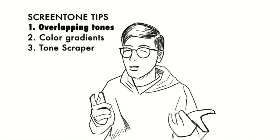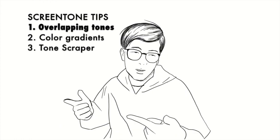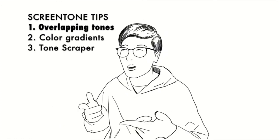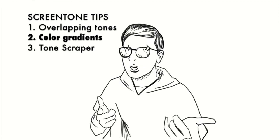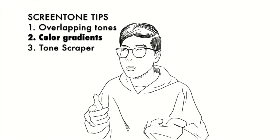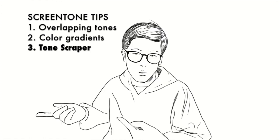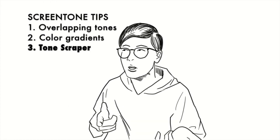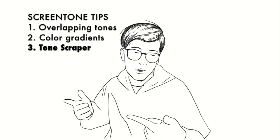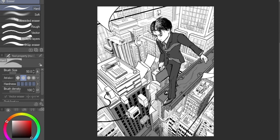To summarize some pointers on Clip Studio Paint: you can overlap tones but only the highest density one will show. You can use color gradients to find a range of black and white tone combinations. And lastly, you can use the tone scraper brush to develop the lighting and shading by gradually adding or removing the screen tone. These techniques have helped me develop this picture and I hope they can help you out in your art.